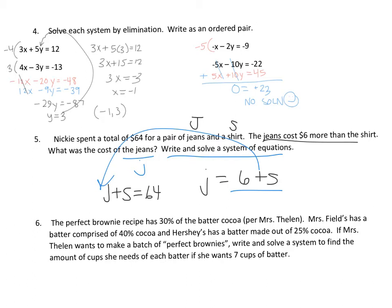So I'm going to solve by substitution. So it's going to be 6 plus s plus s equals 64. So 6 plus 2s equals 64. 2s equals 58. So the shirt costs $29. The shirt costs $29, which makes the jeans $35.